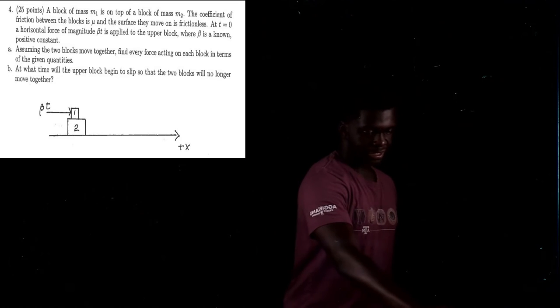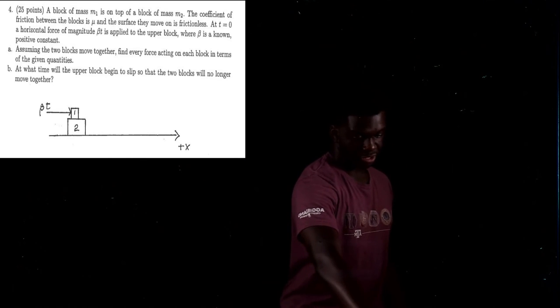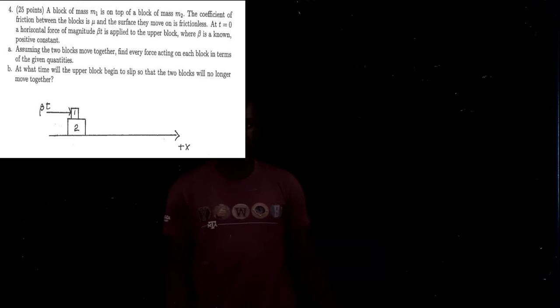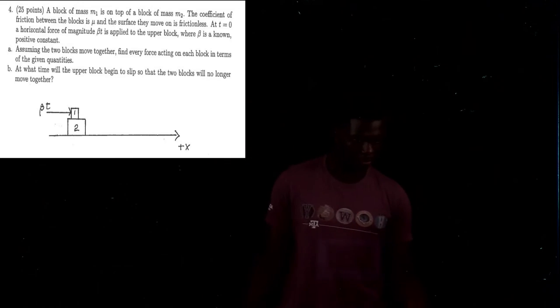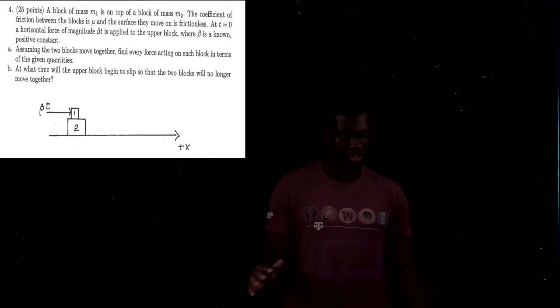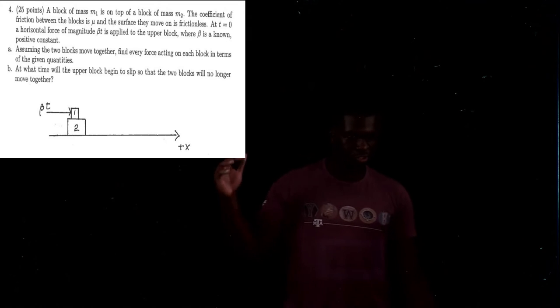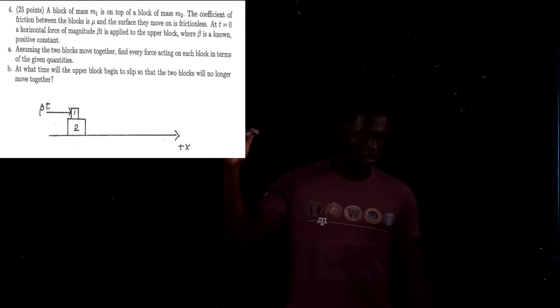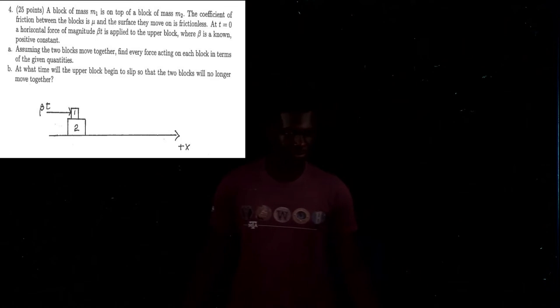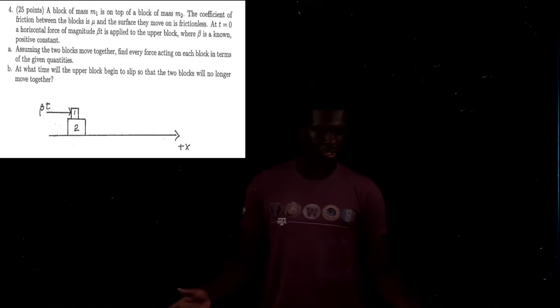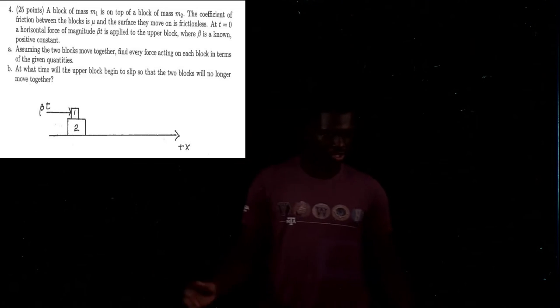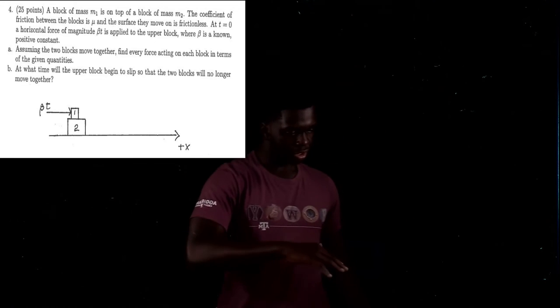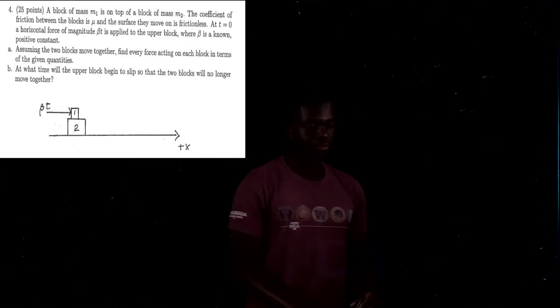Number four, exam one, 2019 — this is a tough one. A block of mass M1 is on top of a block of mass M2. The coefficient of friction between them is mu, and the surface they move on is frictionless. At t equals zero, a horizontal force of magnitude beta T is applied to the upper block, where beta is a positive constant. Assuming they move together, find every force acting on each block, and find when the upper block will begin to slip.